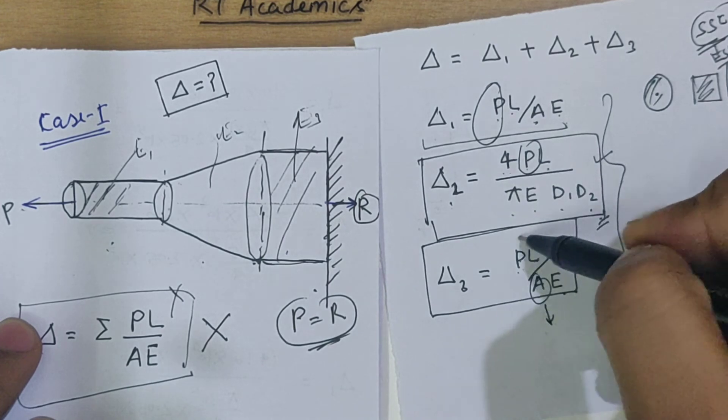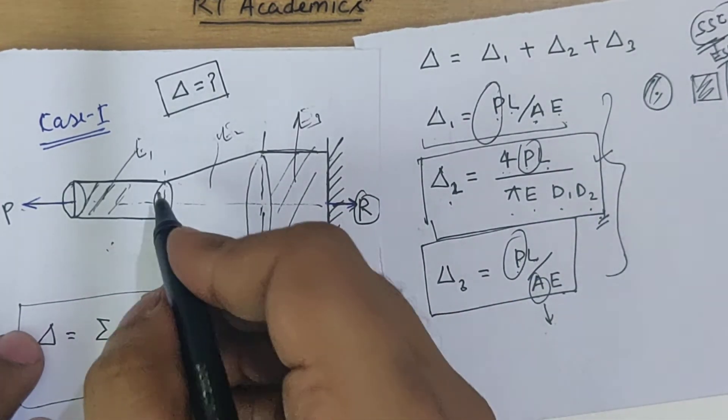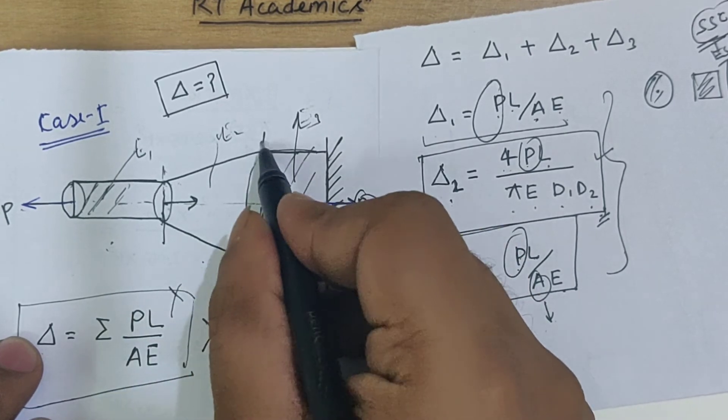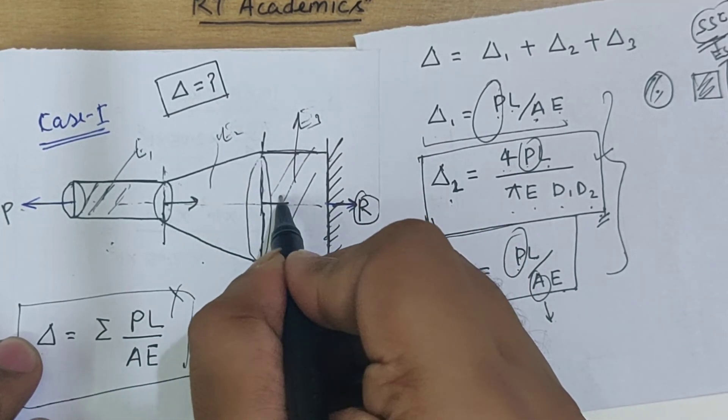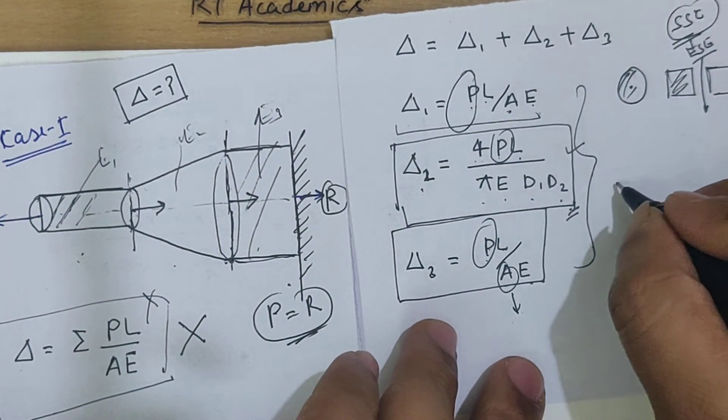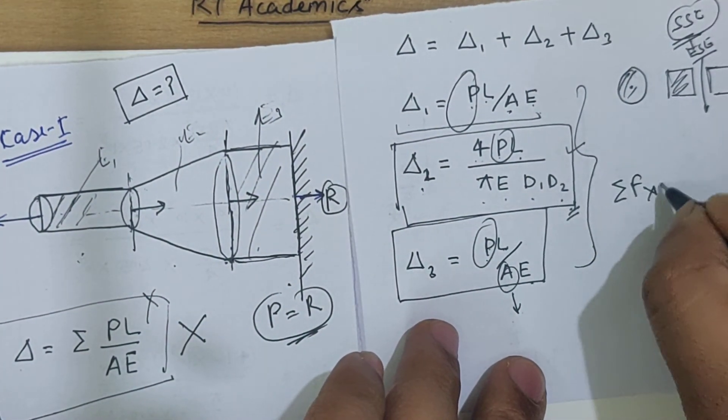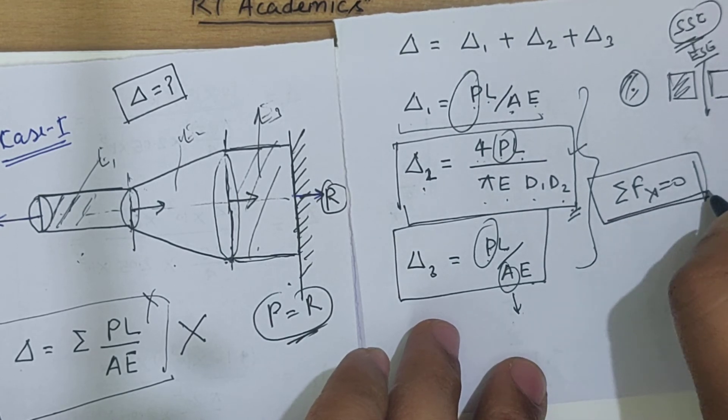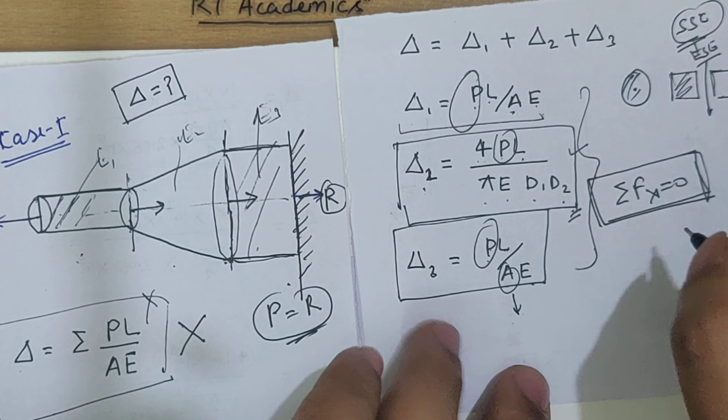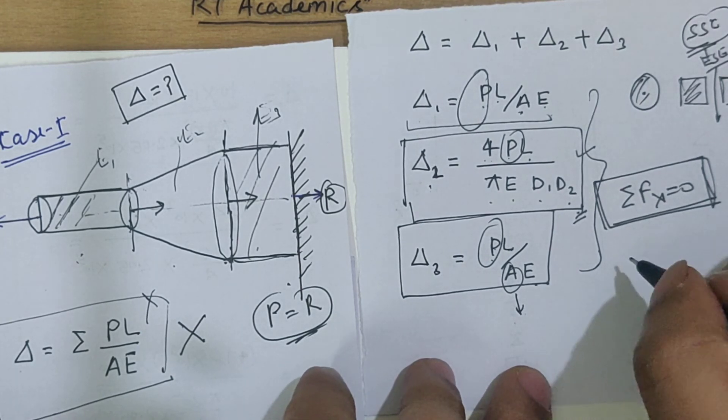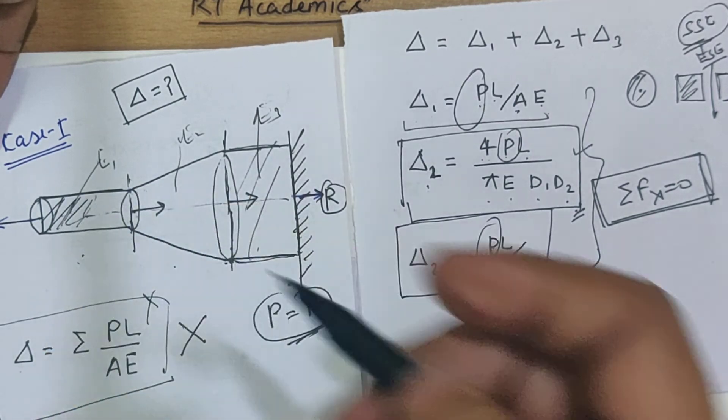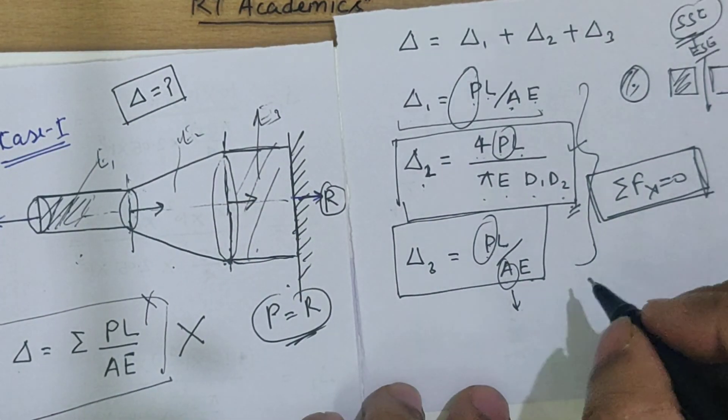But if in some case one more force is acting, then you have to verify first: summation of Fx equals zero. If algebraic sum of all the forces in the horizontal plane are zero, it means static equilibrium in the body, and you can solve. Now you have to find force in individual members by using the same procedure which we have learned earlier.